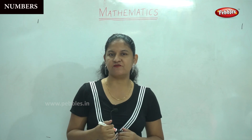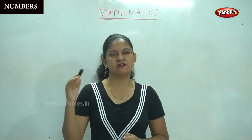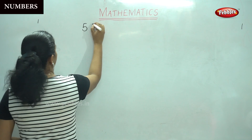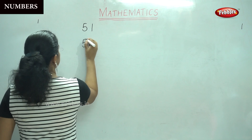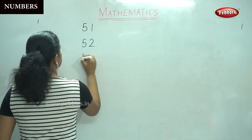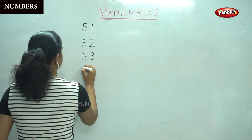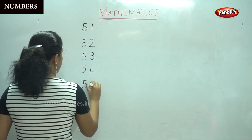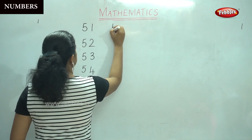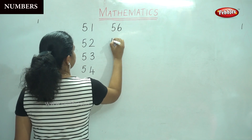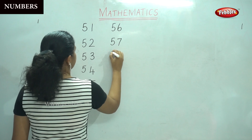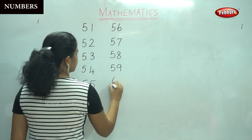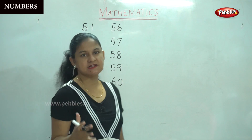So next, are you ready, children, for the numbers from 51 to 60? So after 50 we have 51, 52, 53, 54, 55, 56, 57, 58, 59, and 6 and 0 which gives us 60.